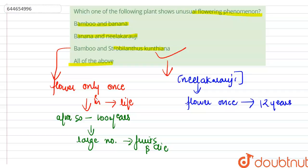So the correct option for this question is bamboo and strobilanthus kuntiana. The other options are incorrect. Bamboo and banana is incorrect because banana shows parthenocarpy.